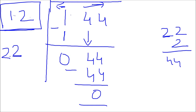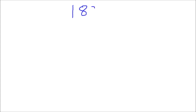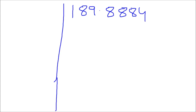That will become clearer with one more example. The number is 189.8884, and we have to find its square root. Our first step is to divide the number into pairs. For the digits to the right of the decimal — 8884 — we pair from left to right: 88 is one pair, 84 is another. For digits to the left of the decimal — 189 — we pair from right to left: 89 is one pair, and 1 is the leftover pair.